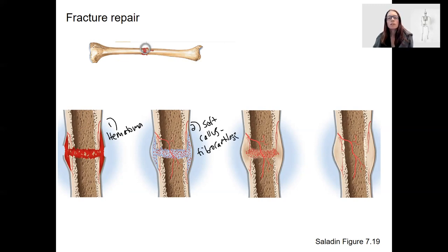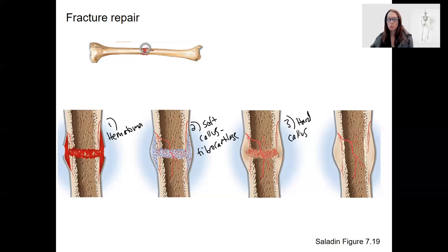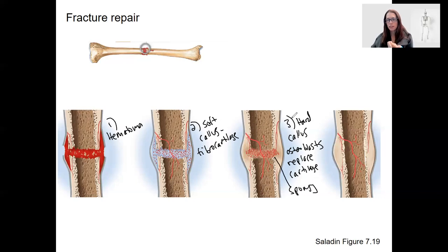The soft callus is formed by chondrocytes, chondroblasts, and fibroblasts creating this temporarily protective callus. Then a hard callus forms. Osteoblasts come in and replace that cartilage — kind of like endochondral ossification. First, this is going to be replaced by spongy bone, because the trabeculae form first until the space is filled in.